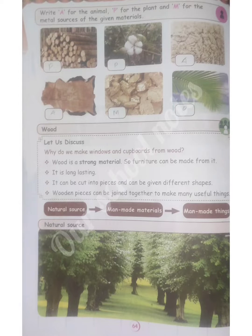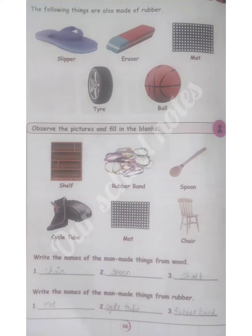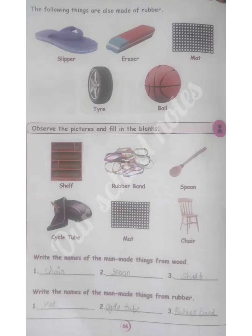Next, page number 66. Observe the pictures and fill in the blanks. Write the names of the man-made things from Wood. First one is Chair, second one is Spoon, third one is Shelf.